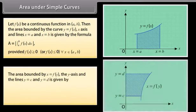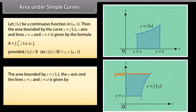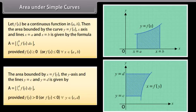The area bounded by x = f(y), the y-axis, and the lines y = c and y = d is given by: A = |∫ from c to d of f(y) dy|, provided f(y) > 0 or f(y) < 0 for each y in [c, d].